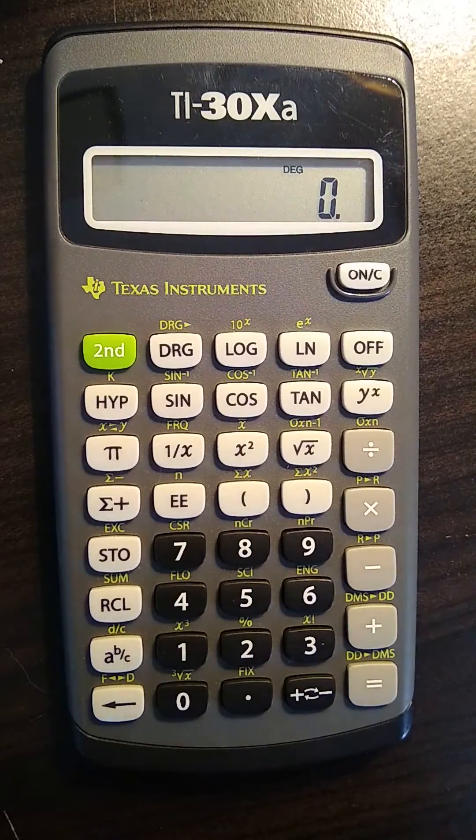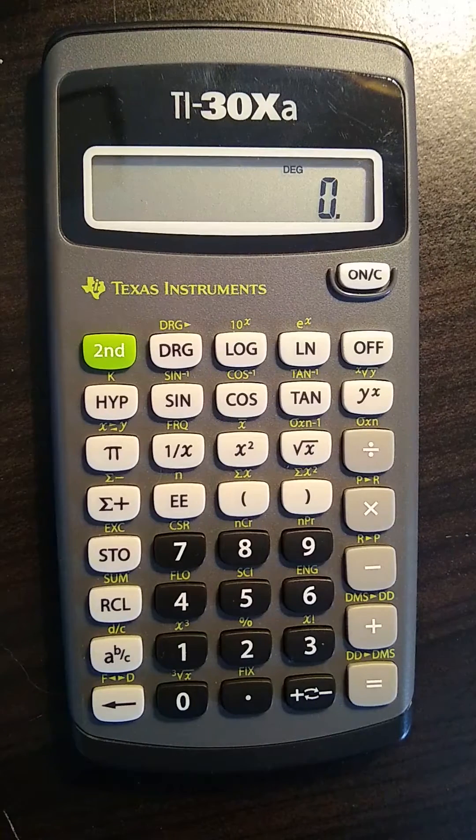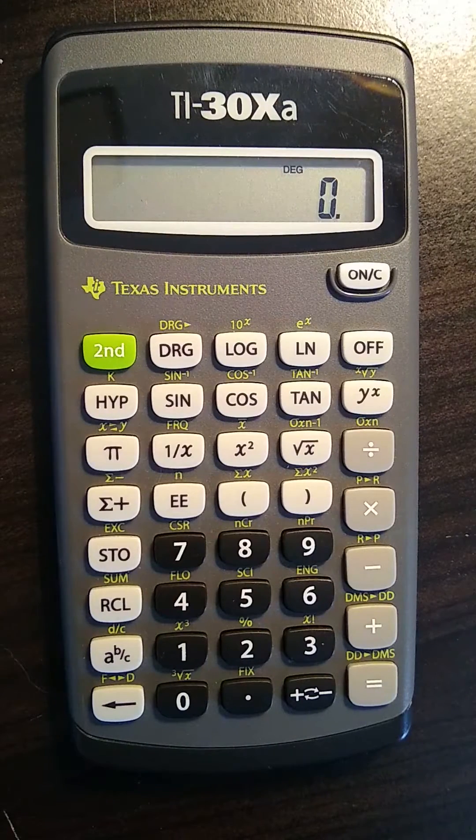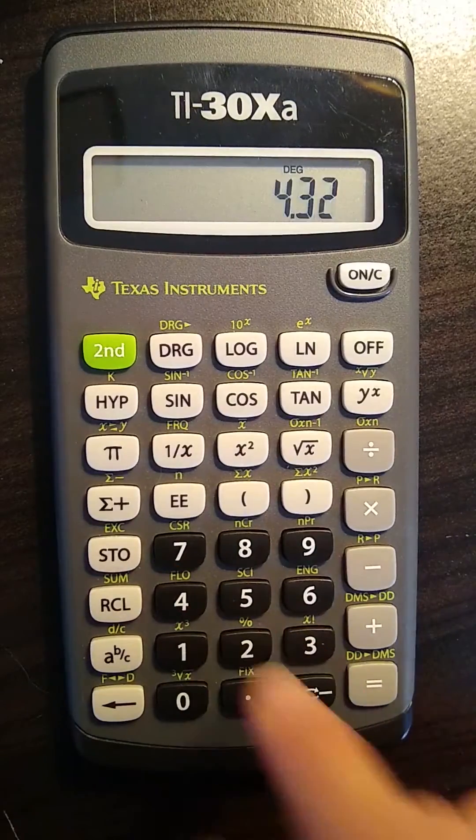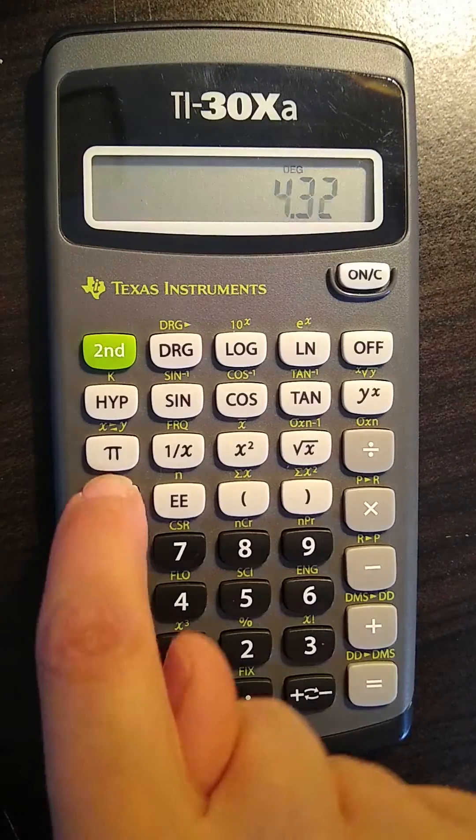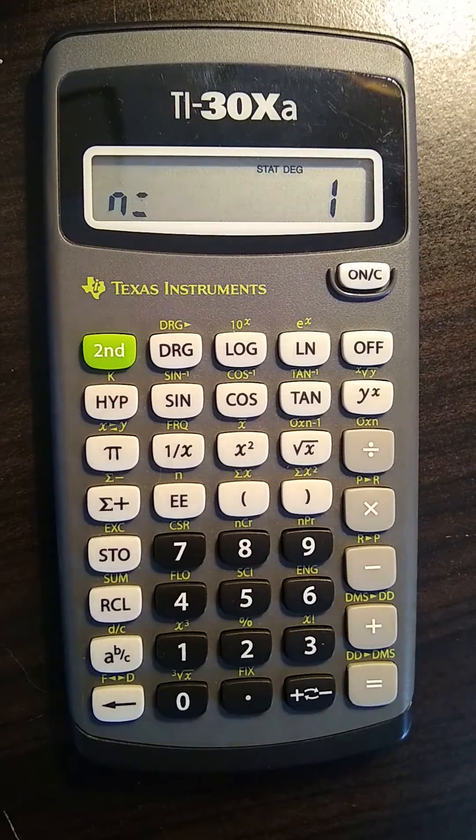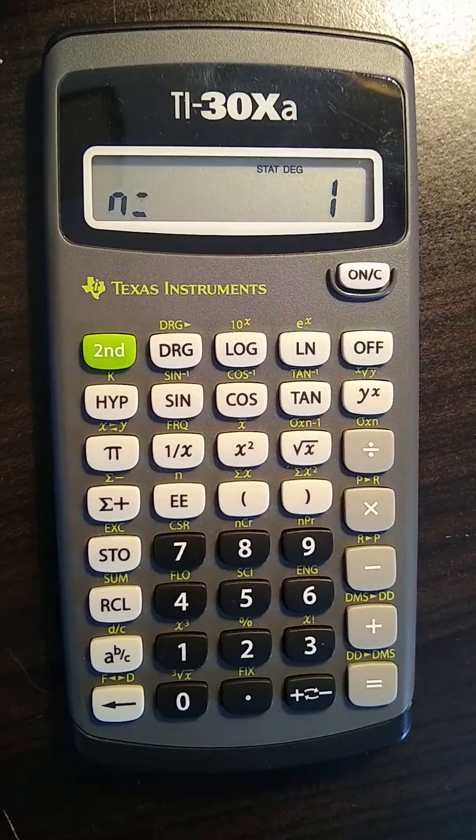In order to enter data points for statistics, it's as simple as putting the number into the calculator. Let's say our first value is going to be 4.32 and then we push the sigma plus button. Here it says n equals one. That tells us we have one value in our data set.